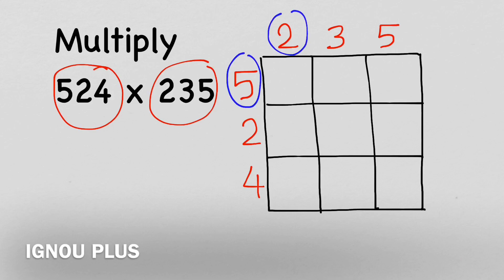Given that this is 5 and this is 2, we have to multiply. So 5 times 2 is 10. How do we write this box? 1 is one half and 0 is one half. Then we have 5 and 3, which is 15.